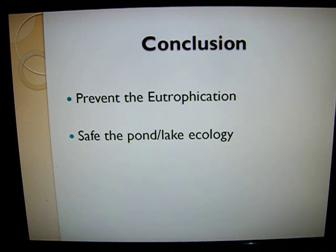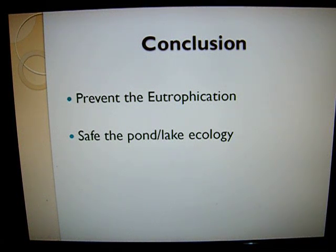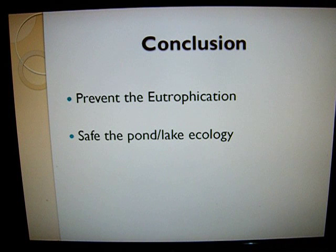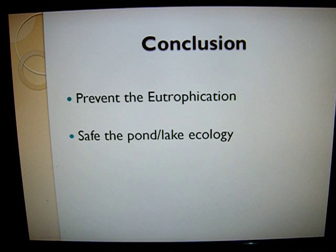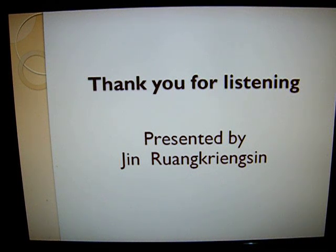In conclusion, the main reason for removing phosphate from wastewater is to prevent eutrophication in order to save the environment. Both biological and chemical methods are efficient for the phosphate removal process. These processes reduce low oxygen levels and other negative effects of eutrophication, and protect pond and lake ecology. Thank you for listening to my presentation, presented by Jin Leung-Greung-Sing.